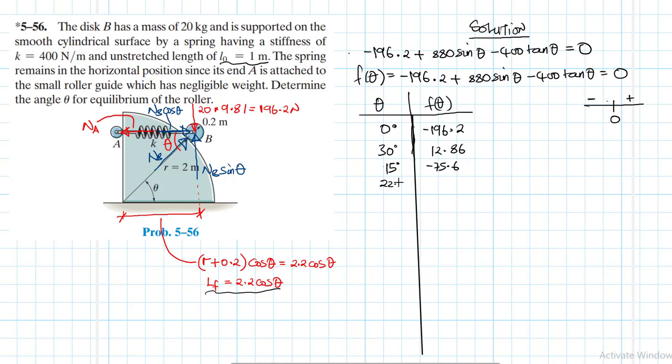Plug in 22.5, we get minus 25.12. So you do the average of 22.5 and 30, you get 26.25 degrees. You get minus 4.2. You continue the process in that manner.